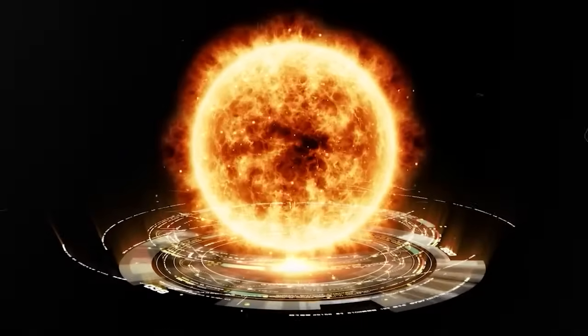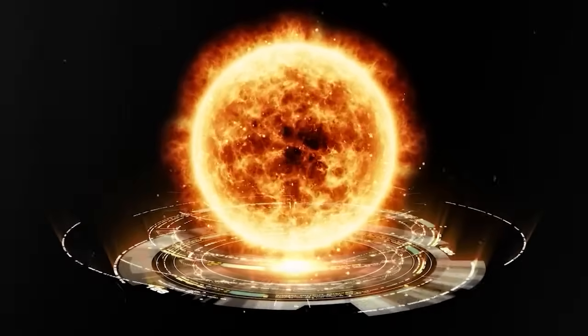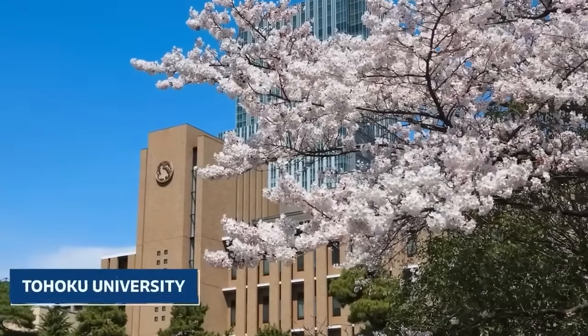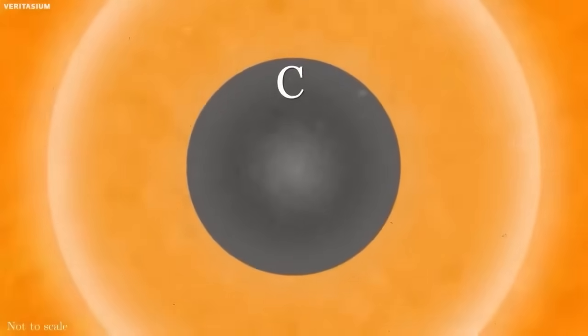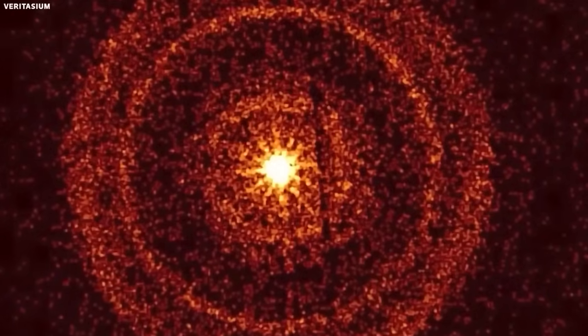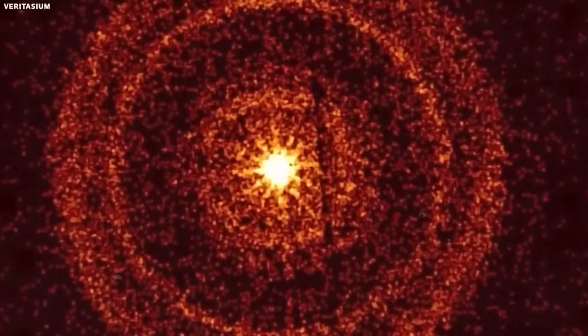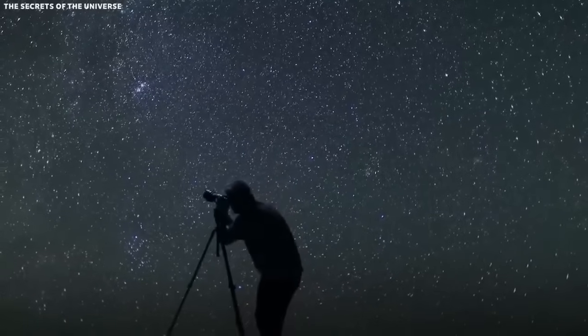So, is Betelgeuse on the brink of an explosive end, or just biding its time? Recent research by Japan's Tohoku University suggests that the star might be in its carbon burning phase right now. Lead researcher Hideyuki Sayo believes that the core might collapse a few decades after its carbon reserves dry up. But not all scientists agree.